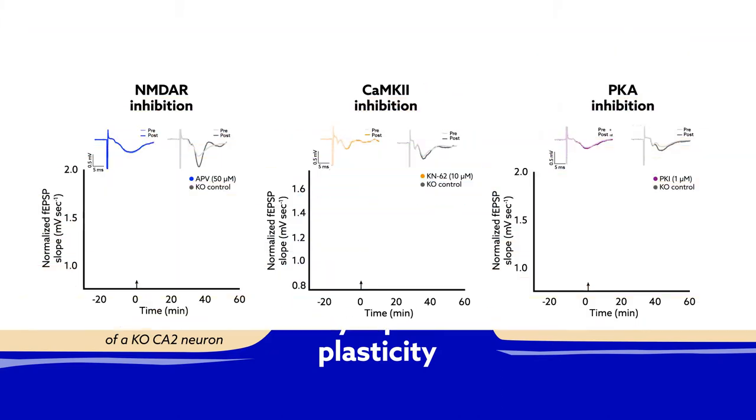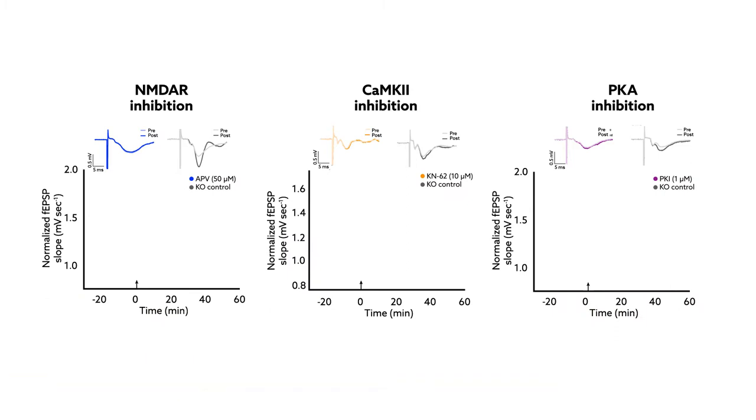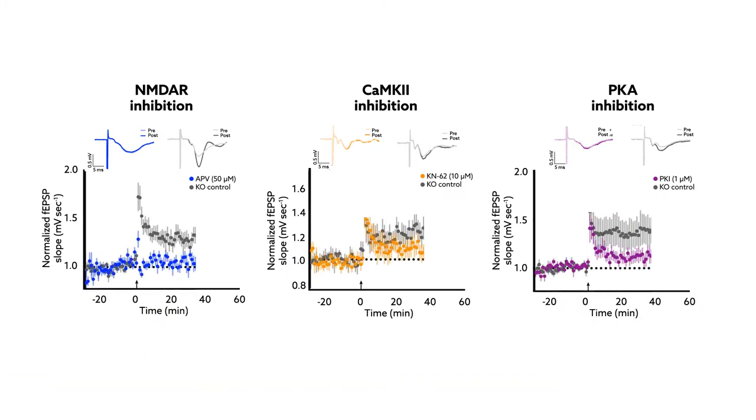The results showed that CA2 neurons lacking RGS14 required activity from all three pathways to achieve synaptic potentiation, revealing a striking similarity to the calcium-driven mechanisms that underlie long-term potentiation in CA1.